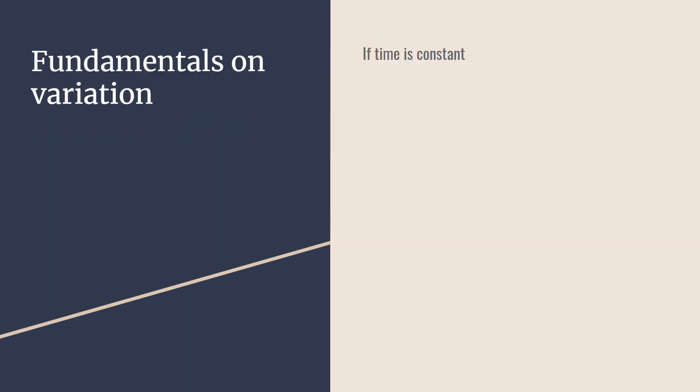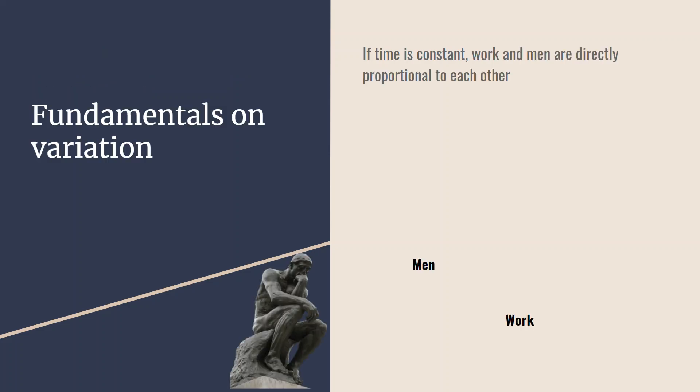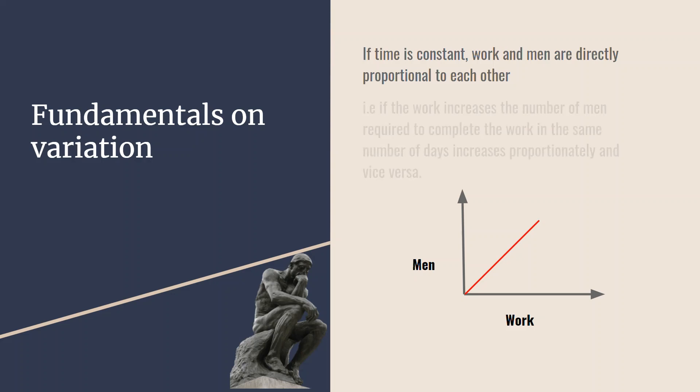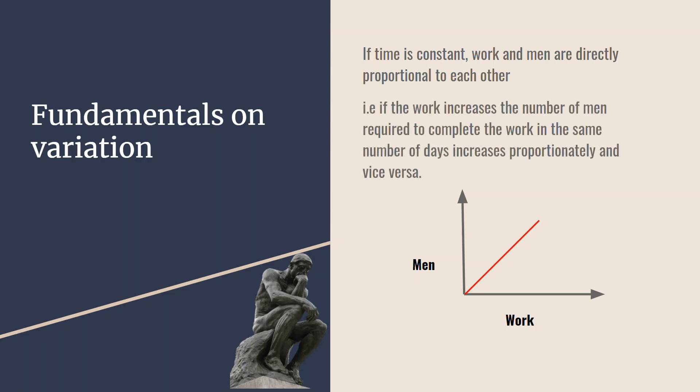If time is constant, work and men are directly proportional to each other. That is, if the work increases, the number of men required to complete the work in the same number of days increases too, and vice versa.